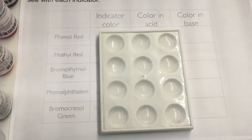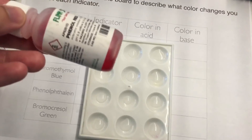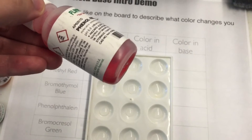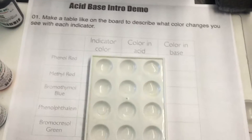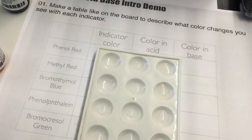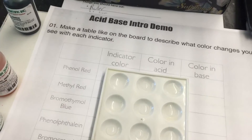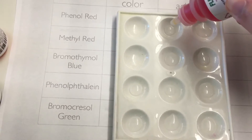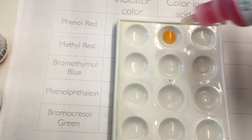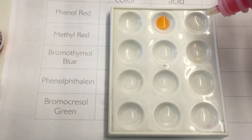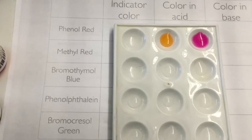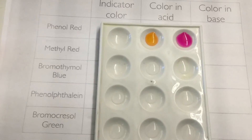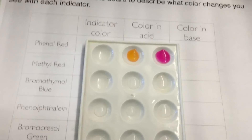The first one is phenol red. This is the color of the indicator — you can be as specific or as vague as you'd like. On the upper left I have acid and on the upper right I have base. So in acid, note the color you see, and then in base — that's the color in acid and then the color in base.